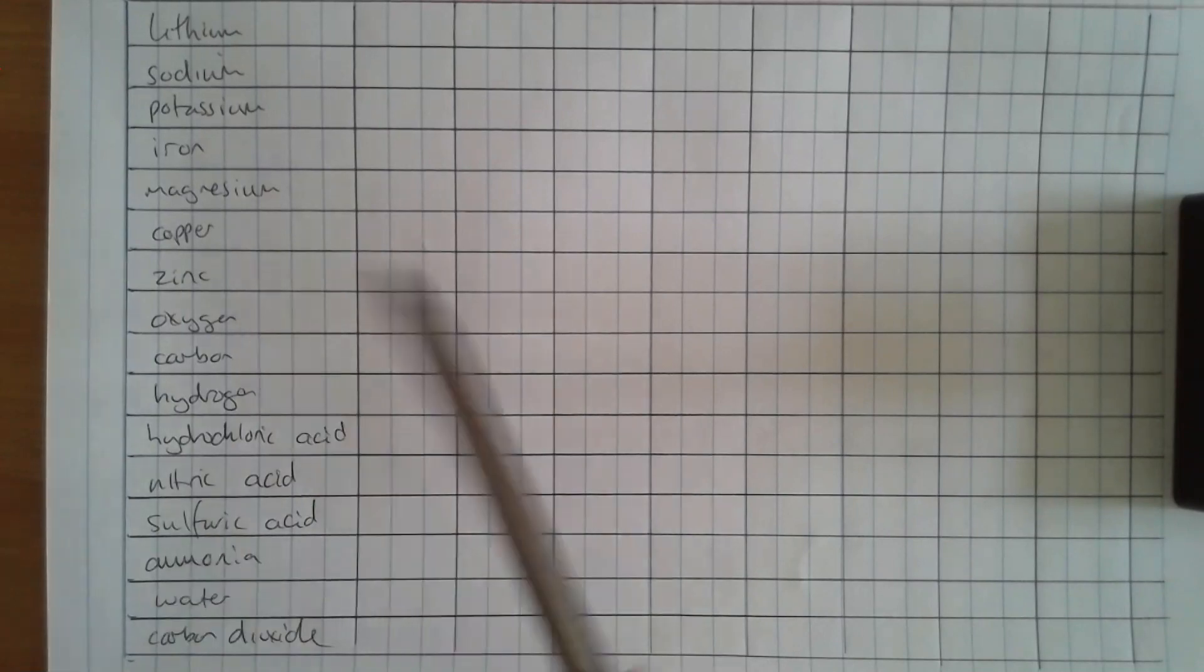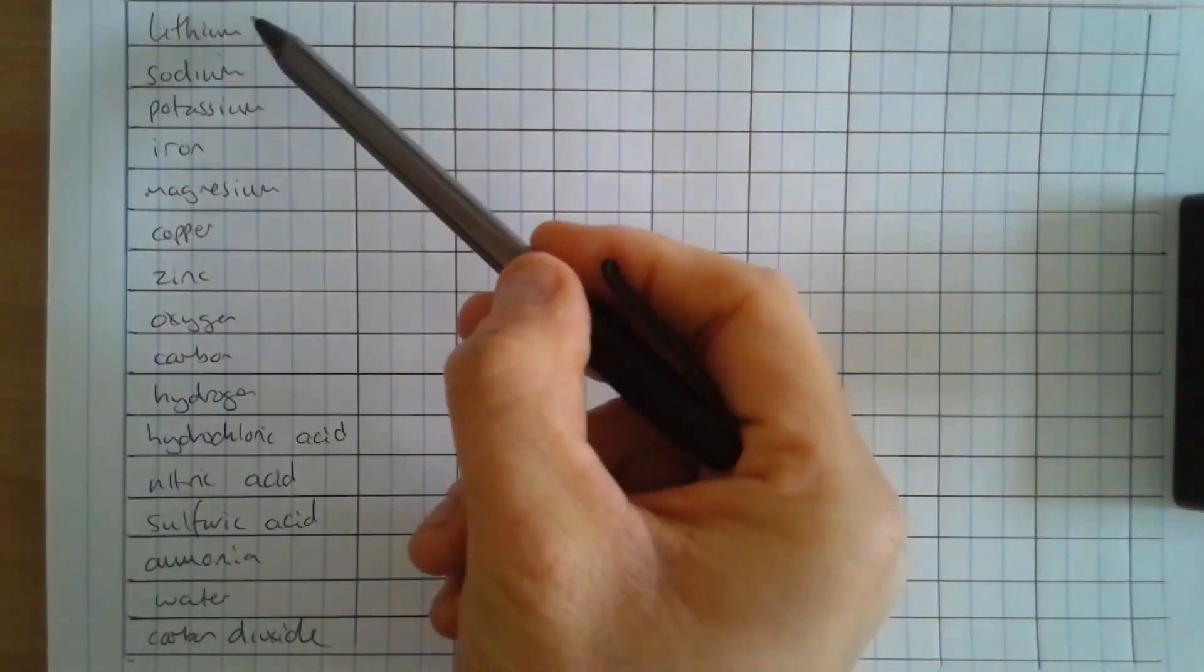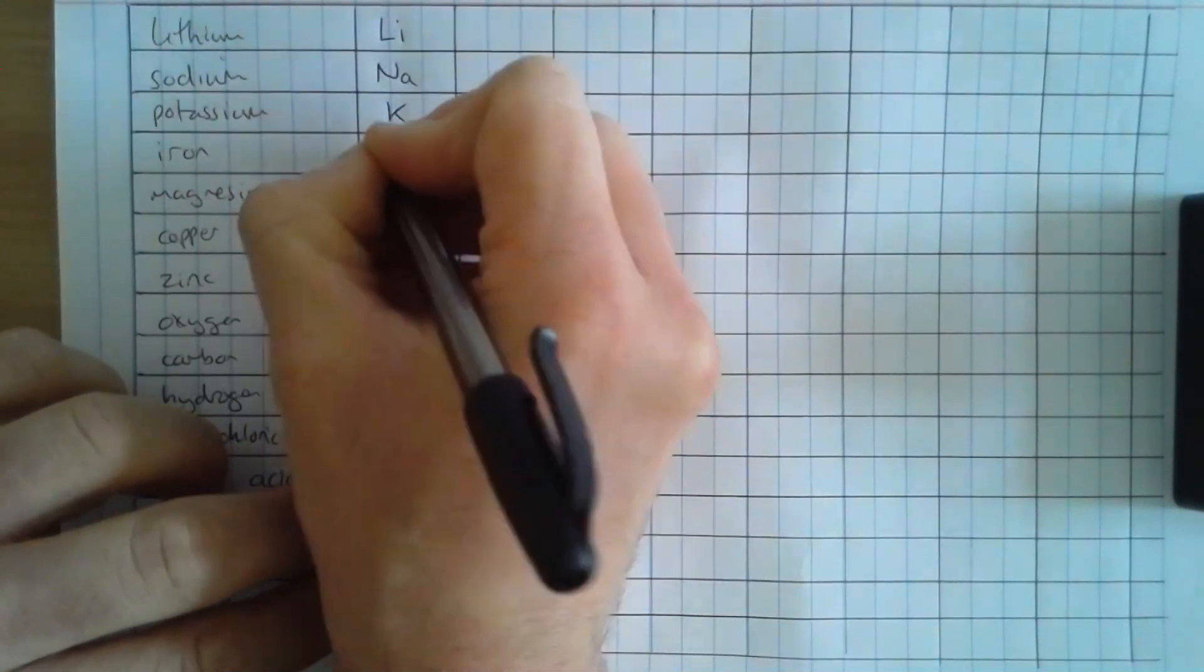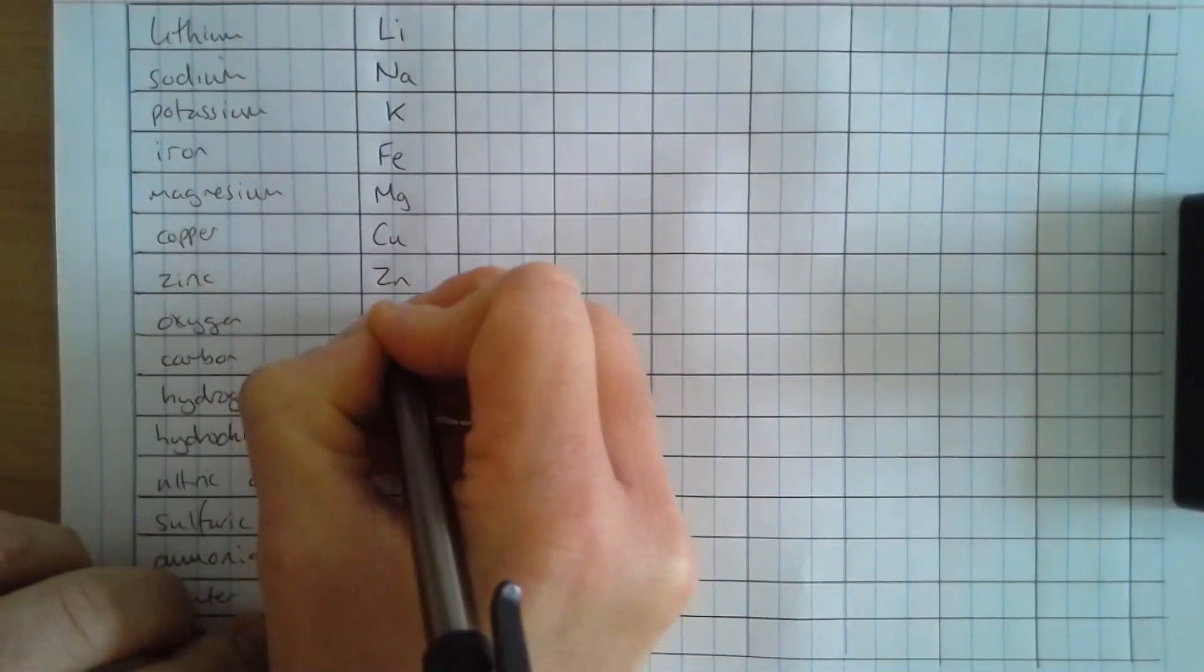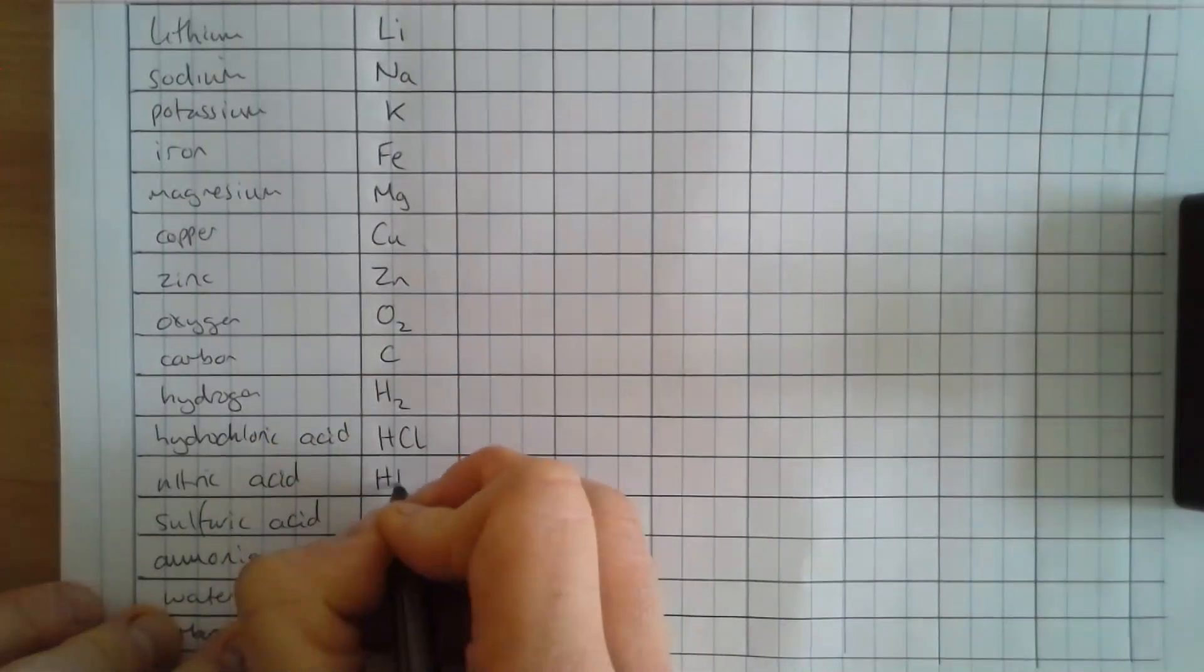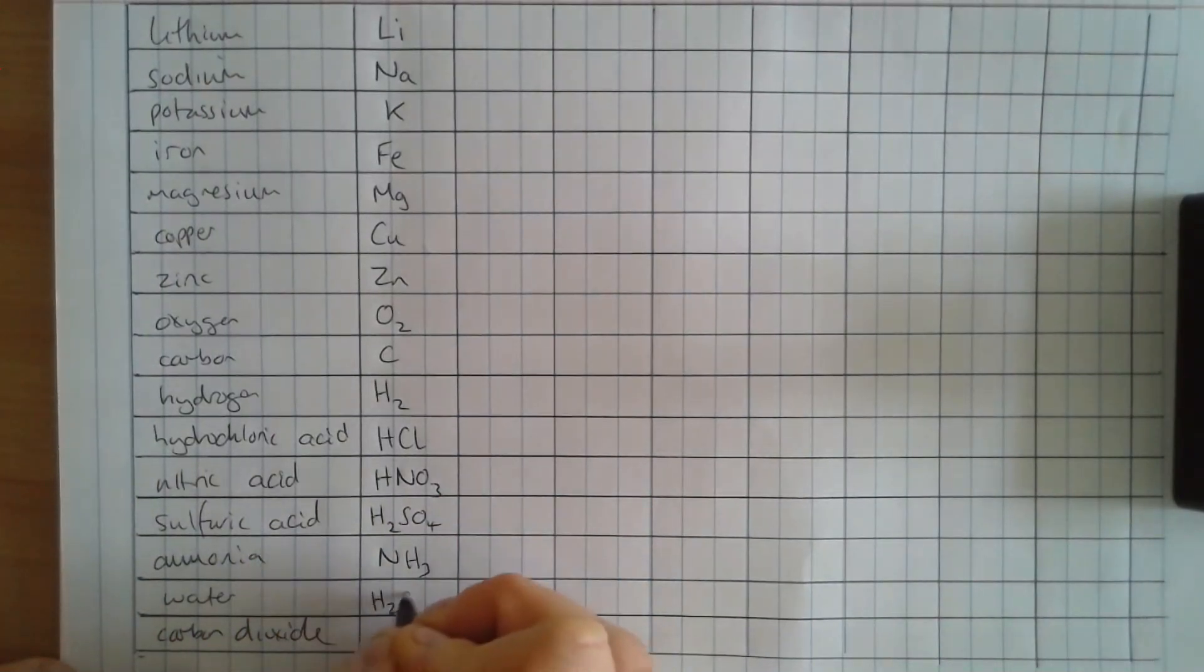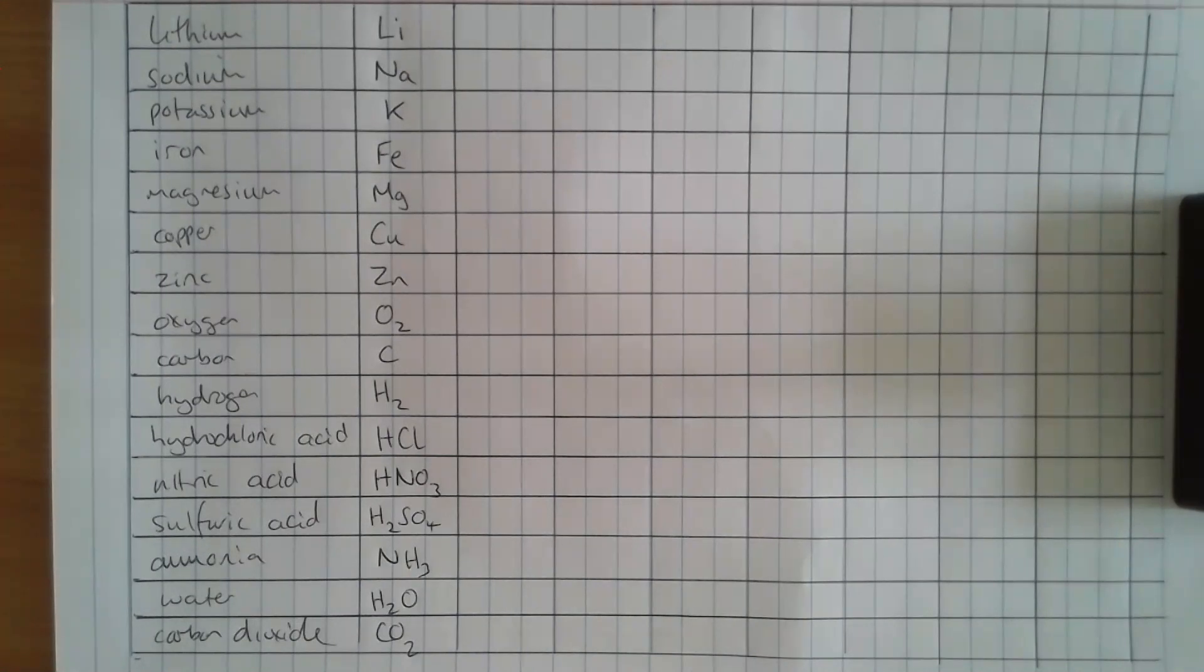So the only thing you're going to have to do today, if this is your lesson, is to make a table like this and then write these in here and then copy in the symbols. Okay, so they've all been written in there. And that's realistically all we need to do for today.